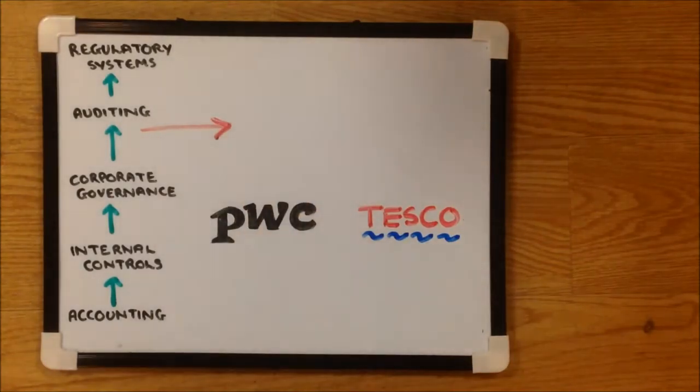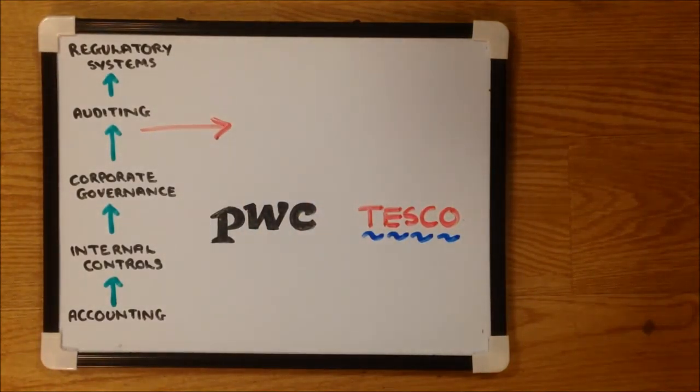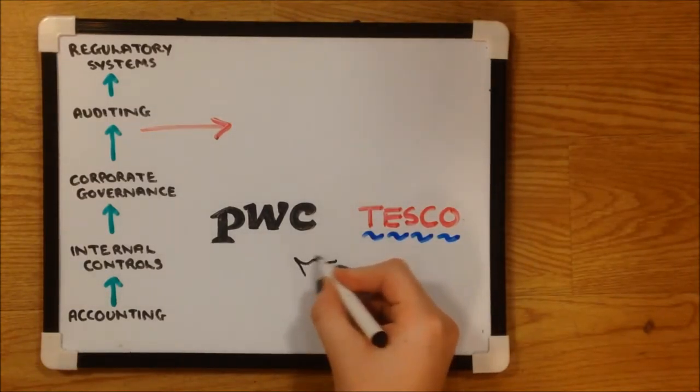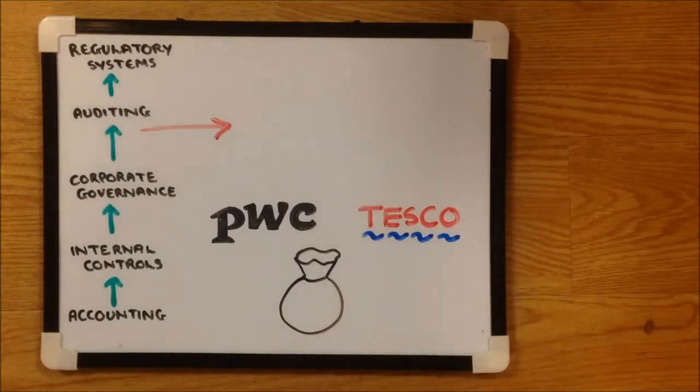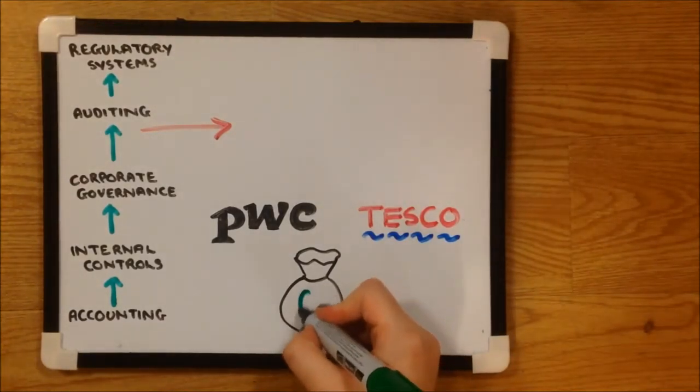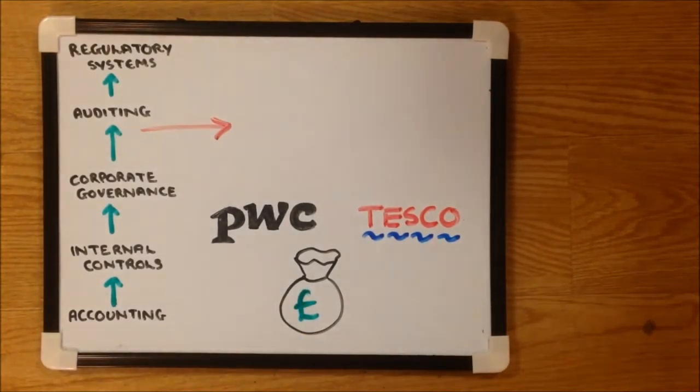Unfortunately, there are a number of threats to independence here too. In the financial year 2013-14, PwC was paid £10.4 million to audit Tesco. At the same time, it was paid £3.6 million for consultancy work. This creates a self-interest threat, where PwC are inclined to keep Tesco's management happy for their own sake.